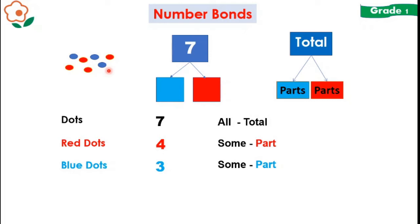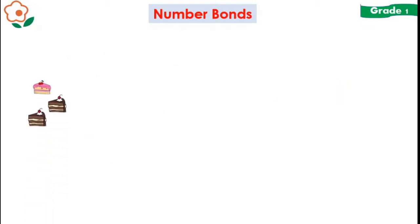The number bond should look like this: 7 is the total connected to the two other boxes which represent parts. So 4 and 3 will be known as its parts. You can say it as 3 and 4 make 7. And you can also say it as 3 plus 4 is equal to 7 or 4 plus 3 is equal to 7 because both are equivalent.